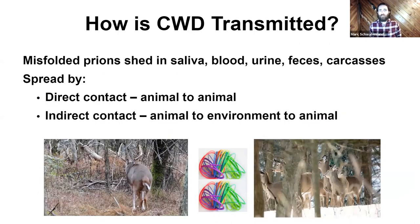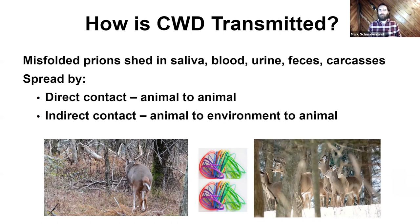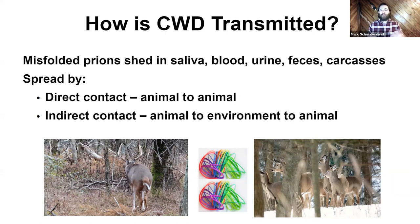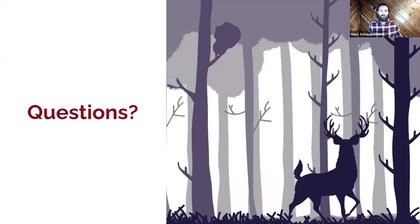How is it transmitted? Those misfolded prions are shed throughout the time the animal is infected. Many positive animals look like normal deer, but during the whole process — from time of infection to death, which can take up to 18 months to two years — they're shedding those prions in saliva, blood, urine, feces, and carcasses when they ultimately die. Transmission happens through direct contact, animal to animal — deer are very social animals. But also indirect contact, where the animal deposits prions into the environment and another animal picks them up.